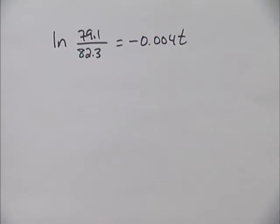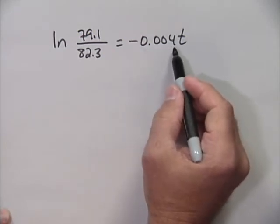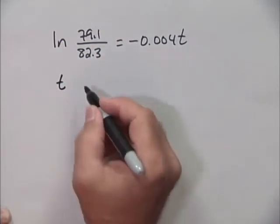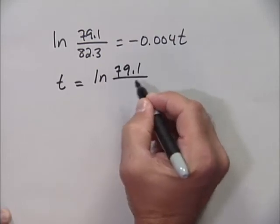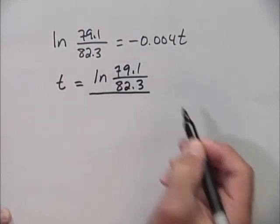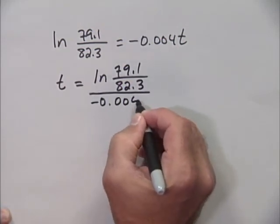To solve for t, we divide by the coefficient of t on both sides. So t equals ln(79.1/82.3) divided by negative 0.004.